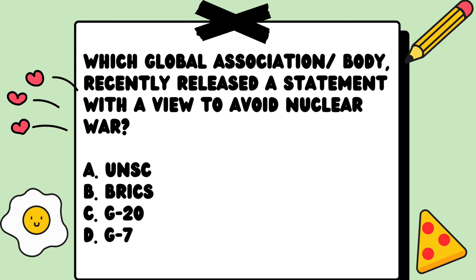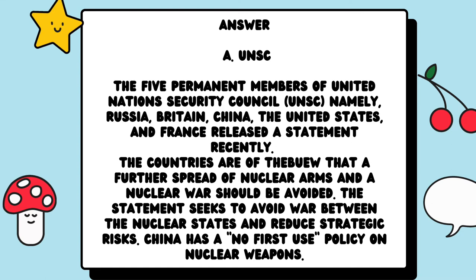Which global association or body recently released a statement with a view to avoid nuclear war? Option A: UNSC, Option B: BRICS, Option C: G20, and Option D: G7. The answer for the question is A. UNSC. You can read the detailed explanation to the answer on the screen.